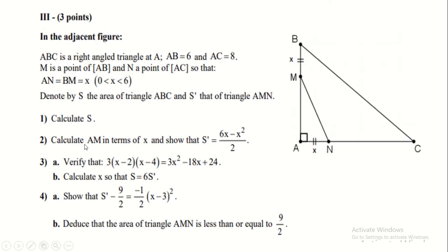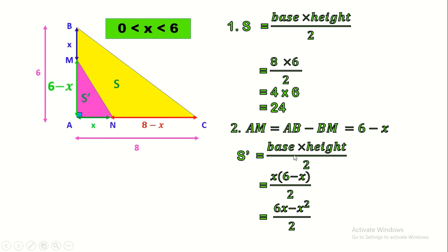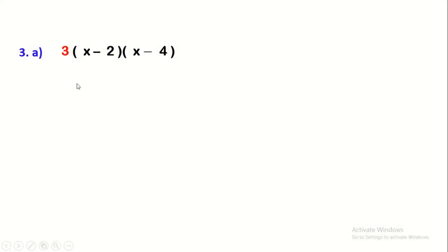Now calculate the area S' of triangle AMN — we should verify it equals (6X minus X²)/2. Triangle AMN is also right at A, so its area is base times height over 2. We consider AN as the base and AM as the height: S' equals X times (6 minus X) over 2. Now we should expand 3 into (X minus 2) into (X minus 4). When expanding three terms, we multiply any two together, then multiply their answer by the third.